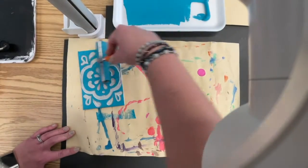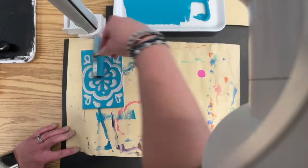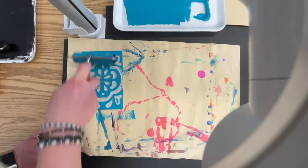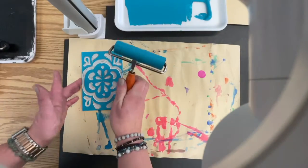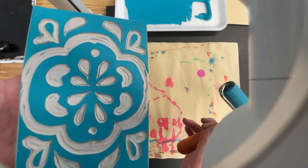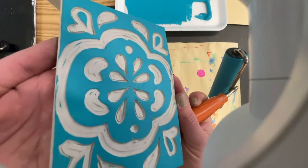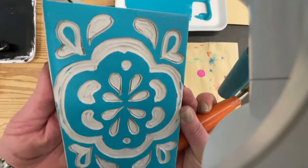This one side is going to get filthy. I'm going to take my brayer and load my linoleum. Wherever I see the ink is what's going to transfer to the paper. I'm going to go up and down, getting those edges real good. I'm going to go side to side.